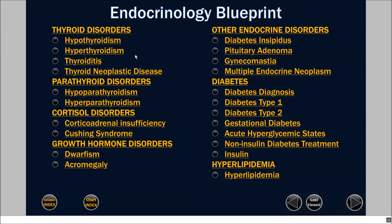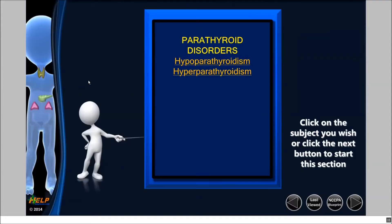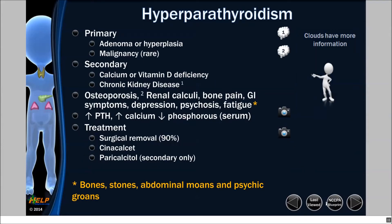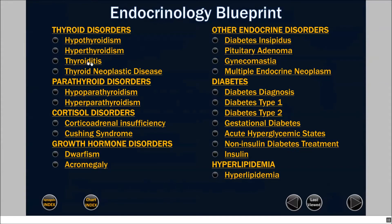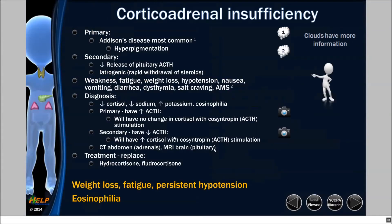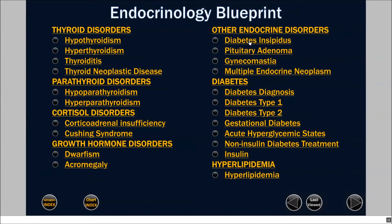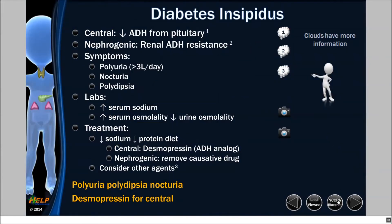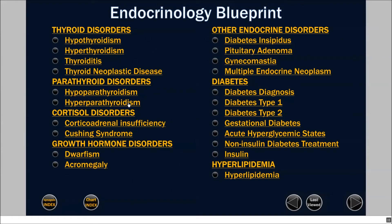If I just wanted to study parathyroid disorders today, I can click on just parathyroid disorders, get to this submenu, and then click hyperparathyroidism if I want. You see here it says NCCB blueprint — click that. It also means that if I just wanted to see cortical adrenal insufficiency, I can click that right off the blueprint, or I can see diabetes insipidus. You can use the blueprint to navigate any way you want.